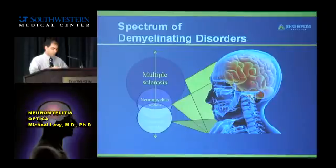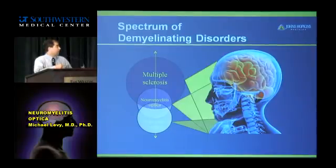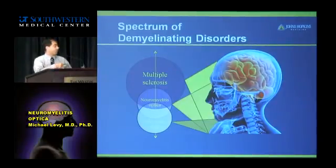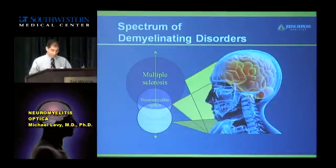Another way to think about NMO is where it frequently attacks. MS attacks the brain, the optic nerves, and the spinal cord. TM, by definition, is just spinal cord. And NMO is more of optic nerve, brain stem, and spinal cord. So again, that's another way to think about NMO.